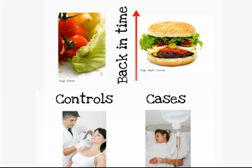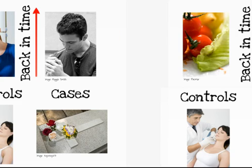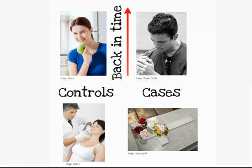This is retrospective data collection, which makes it prone to recall bias. Another case control design might be to compare deaths with our hospital controls. In this case, we obviously can't ask the cases any questions about their recent behaviour, so we'd have to rely on routinely collected data, perhaps from their most recent hospital visit.